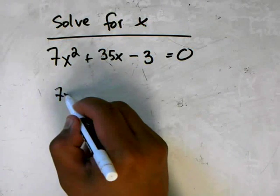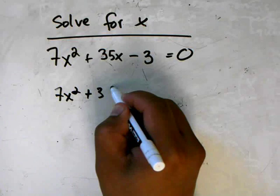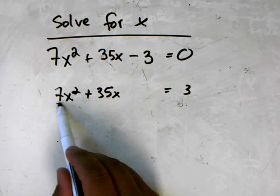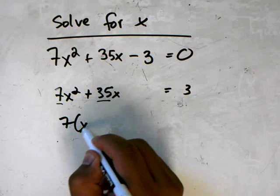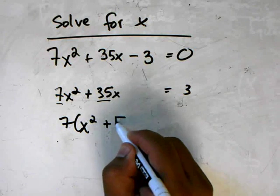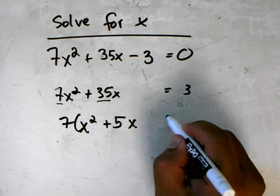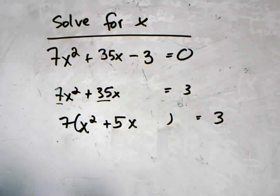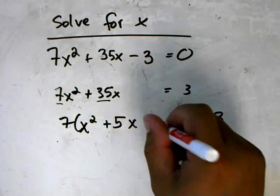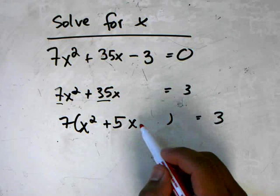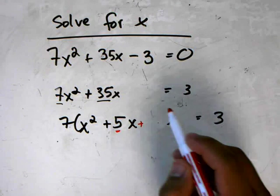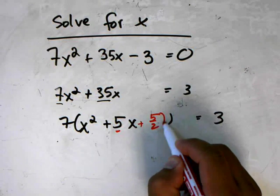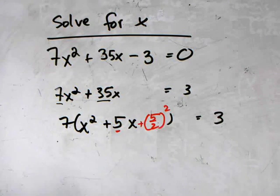First thing I'm going to do is move 3 to the other side, so 7x² + 35x = 3. Factor out 7 from both of these terms: 7(x² + 5x) = 3. Now I need to add something in here so that I can complete the square, and it's one half of this number squared: (5/2)².